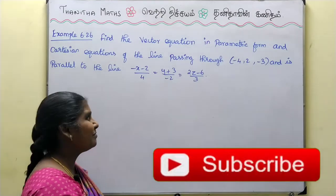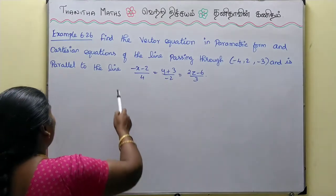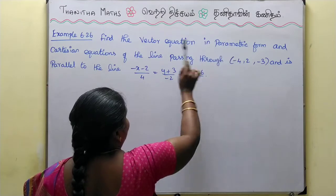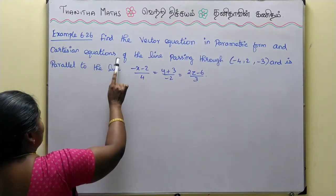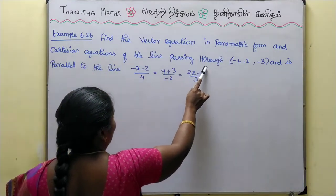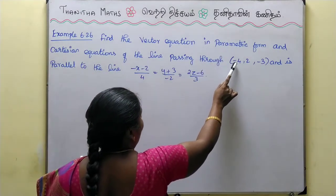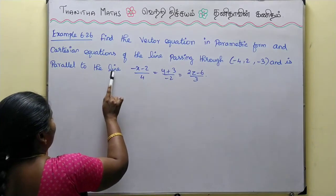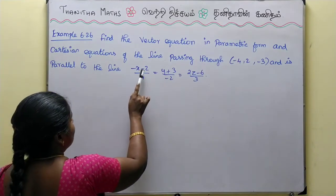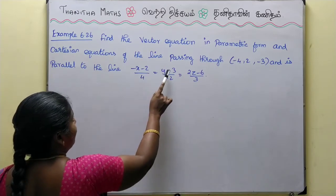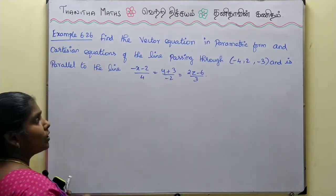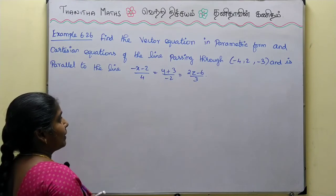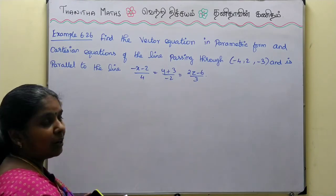Example 6.26: Find the vector equation in parametric form and Cartesian equations of the line passing through (-4, 2, 3) and parallel to the line: (-x - 2)/4 = (y + 3)/(-2) = (2z - 6)/3.